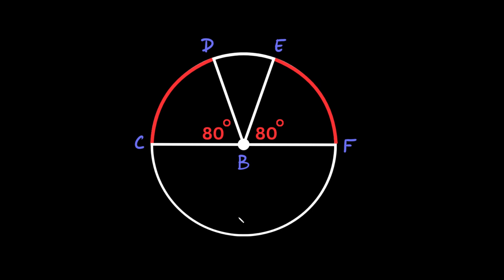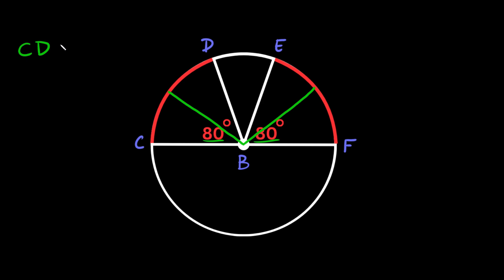Let's start with this first example. As you can see we have these two red arcs. They're both 80 degrees and they also have the same radius — we know that because both of these arcs are on the exact same circle. Since these two red arcs have the same radius and the same central angles, they are congruent to one another. So arc CD is congruent to arc EF.